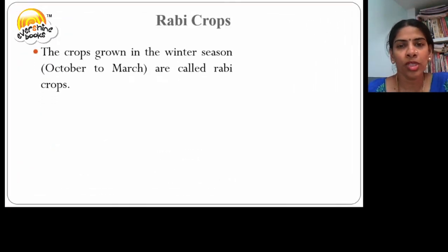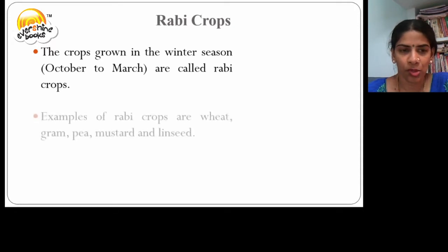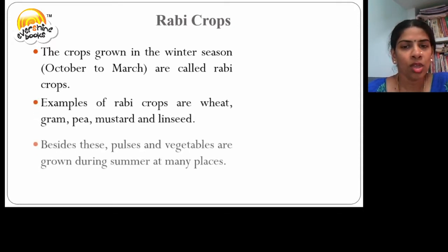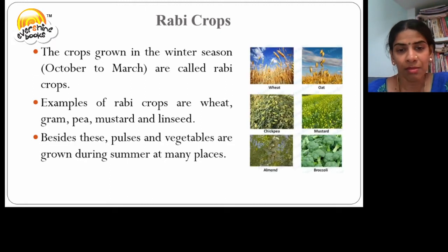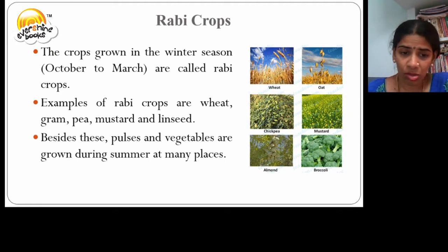The crops grown in the winter season, i.e., from October to March, are called rabi crops. It includes wheat, gram, pea, mustard, linseed, broccoli, almond, and oats, also grown during summer.